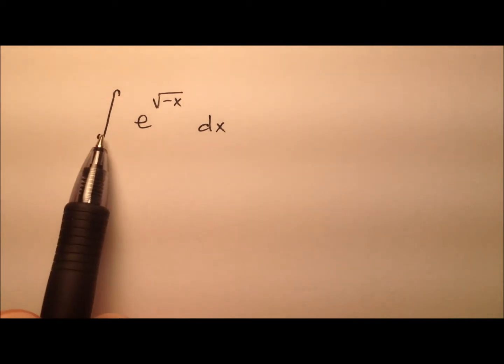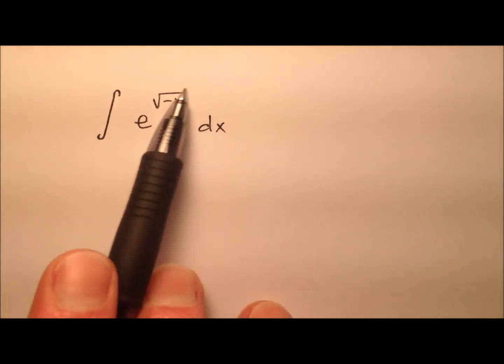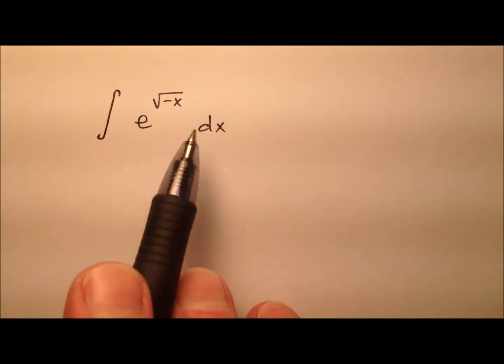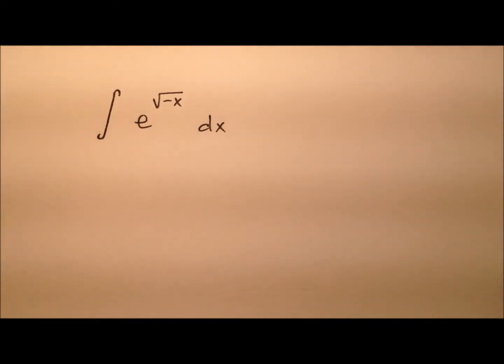In this example, we're going to go ahead and integrate this expression here. We have e to the power of the square root of negative x, and of course that's with respect to x.